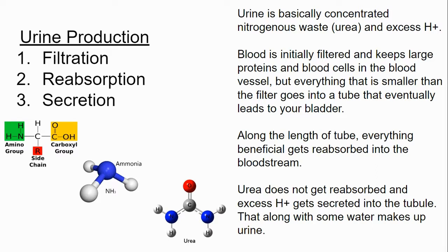Blood is initially filtered through mechanical filtration. The blood keeps some water because it has to keep on flowing, and it keeps all the blood cells — red blood cells, white blood cells — and those large proteins: the globulins, albumins, and fibrinogens. All that large stuff stays in the blood and does not go into the tubule. Everything smaller than that gets filtered out into the tube that leads to your bladder.